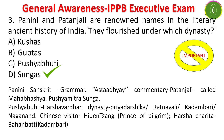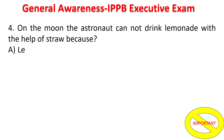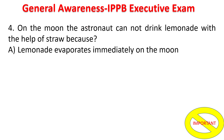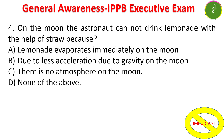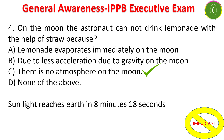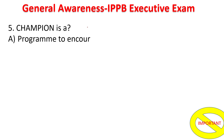Next question: on the Moon, an astronaut cannot drink lemonade with the help of a straw because there is no atmosphere on the Moon. Without atmospheric pressure, you cannot drink water through a straw. Regarding sunlight and moonlight: sunlight reaches Earth in 8 minutes 18 seconds, and moonlight reaches Earth in 1.3 seconds.